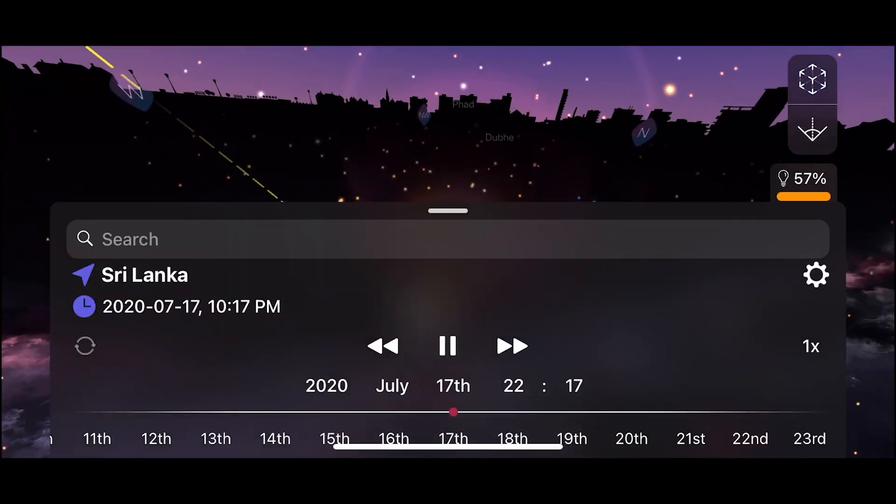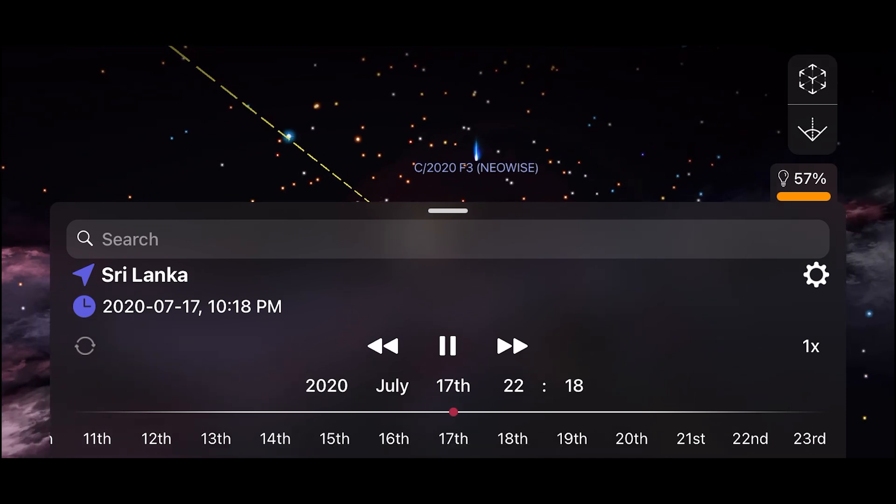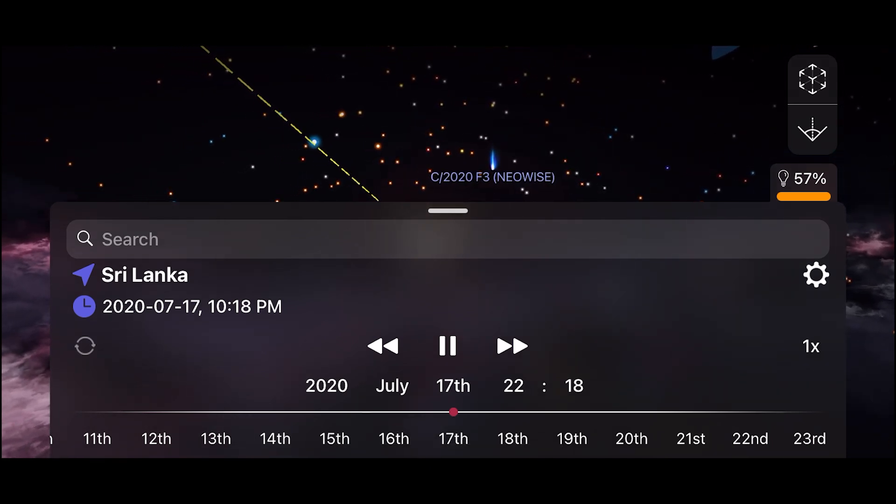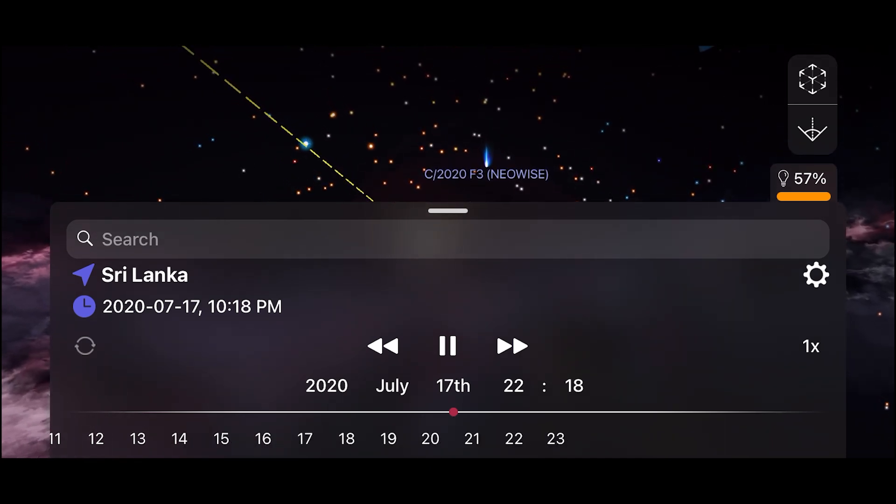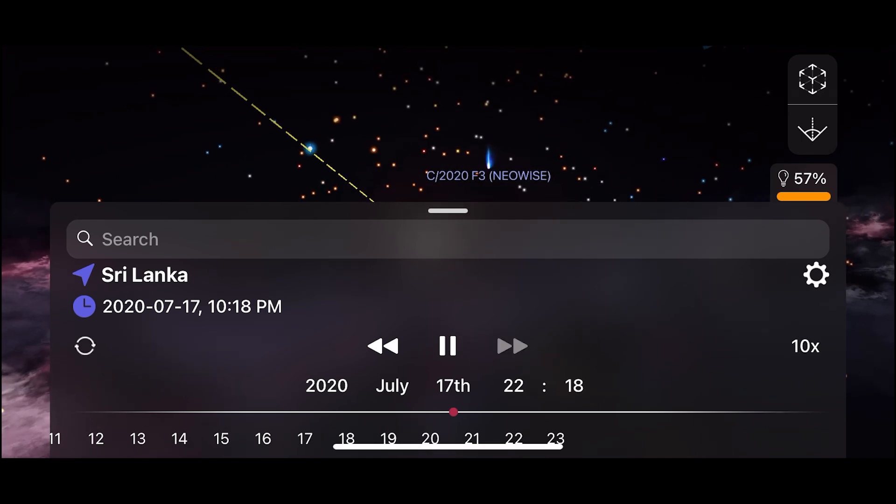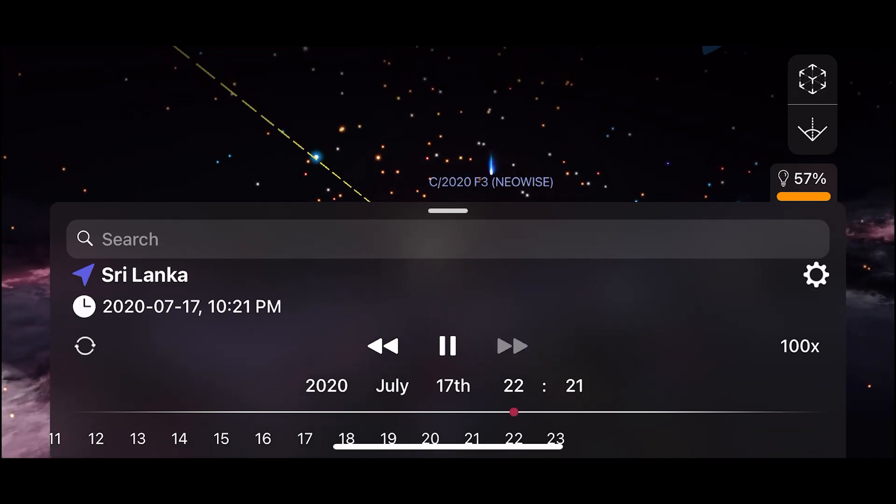You can follow the arc of the comet around the sky by clicking on the date time settings below the search bar. This is called the space travel feature. It will allow you to see the path of the comet in the days and hours in the future.